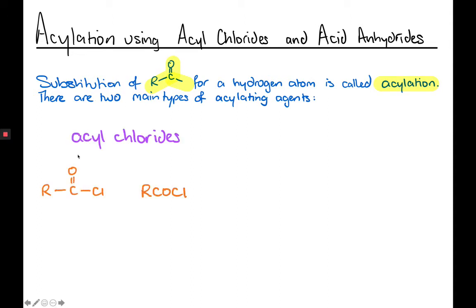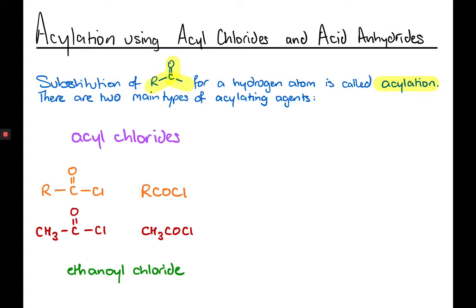Acyl chlorides are essentially just like a carboxylic acid, but instead of having the OH group, they've got a chlorine instead. This actually makes them more reactive — chlorine is a very good leaving group. In the condensed formula, the RCO is the acyl part and then the chlorine makes it the chloride. For a concrete example, if the R group is a methyl group, there are two carbons present — one in the carbonyl and one in the methyl group — making it eth-. The compound is saturated, so it's ethan-, and we recognise it as an acyl chloride from the -oyl chloride ending: ethanoyl chloride.